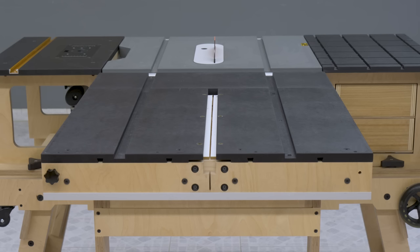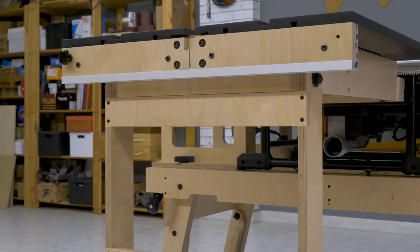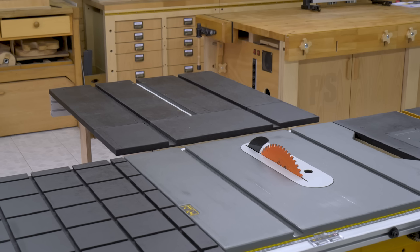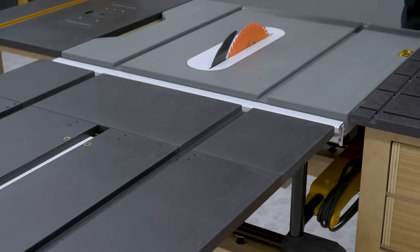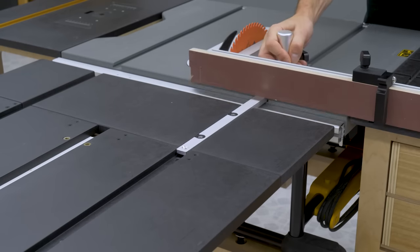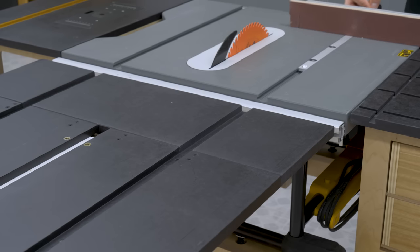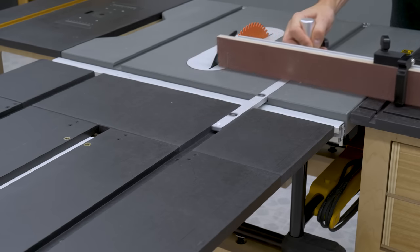I've cut some channels in both outfeed tabletops. They're aligned with the table saw's miter slots. This way I can continue using accessories such as the miter gauge and other jigs. I've cut them a little wider than the saw slots so that I won't have space problems with the sliders.